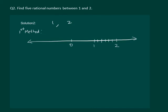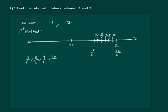We know that 1 will be equal to 6 by 6, while 2 will be equal to 12 by 6. So the numbers between 1 and 2 will be 7 by 6, 8 by 6, 9 by 6, 10 by 6, and 11 by 6. Therefore, 7 by 6, 8 by 6, 9 by 6, 10 by 6, and 11 by 6 are the five rational numbers between 1 and 2.